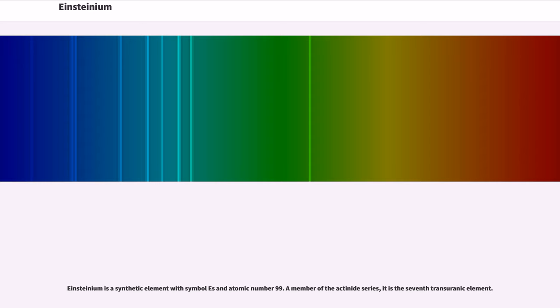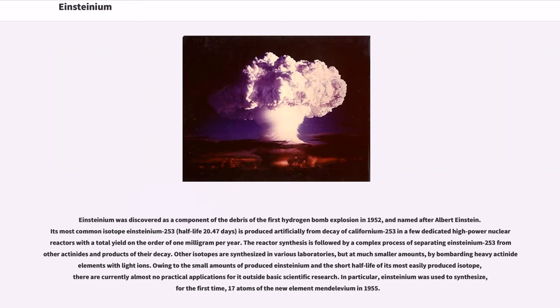Einsteinium is a synthetic element with symbol Es and atomic number 99. A member of the actinide series, it is the 7th transuranic element. Einsteinium was discovered as a component of the debris of the first hydrogen bomb explosion in 1952, and named after Albert Einstein. Its most common isotope Einsteinium-253, half-life 20.47 days, is produced artificially from decay of Californium-253 in a few dedicated high-power nuclear reactors with a total yield on the order of 1 mg per year.